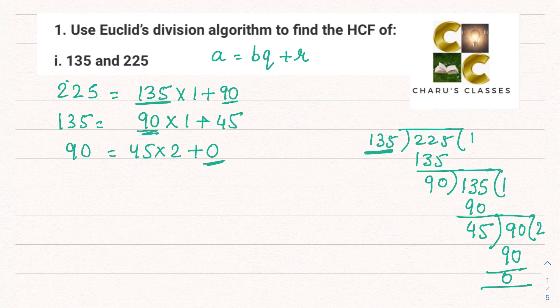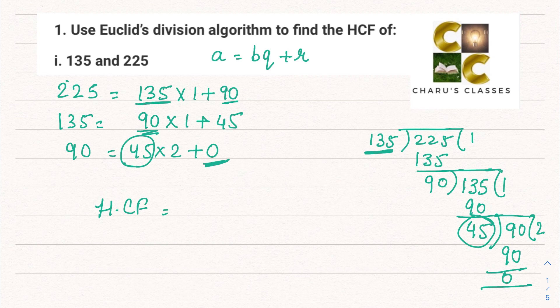We have to continue this till we reach the remainder 0. Now our remainder is 0. When our remainder is 0, at that time, whatever is the divisor, that is our HCF. So in this case, the HCF of 135 and 225 is 45.